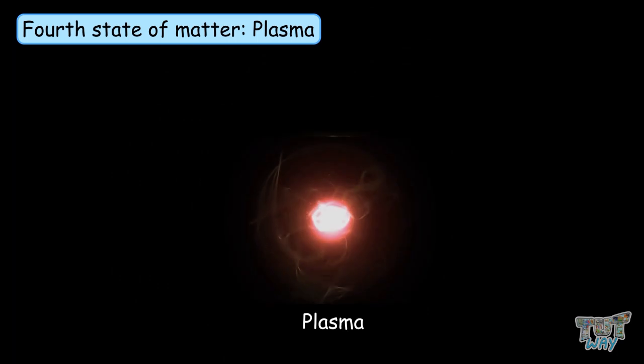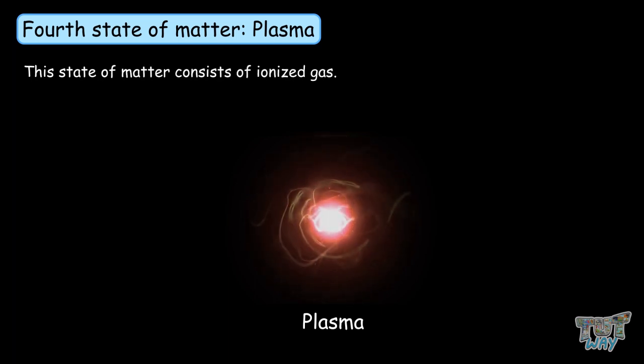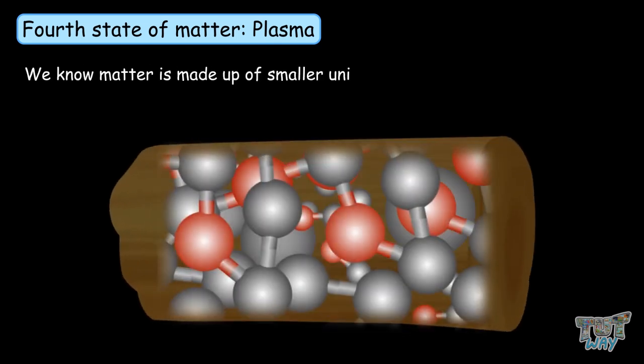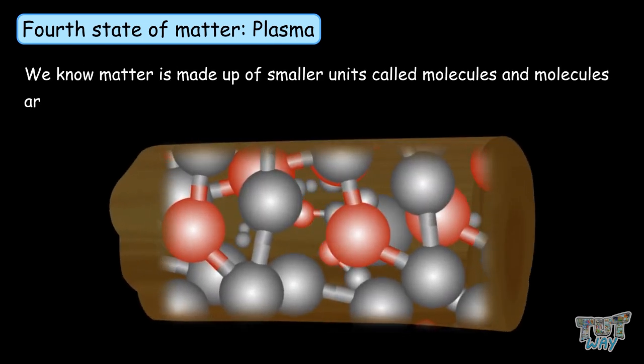Now, let's learn more about this fourth state of matter, which is plasma. This state of matter consists of ionized gas. What is the meaning of ionized gas? We know matter is made up of smaller units called molecules, and molecules are made up of atoms.